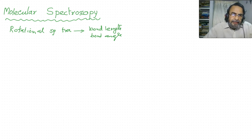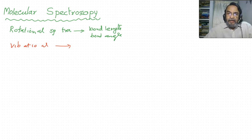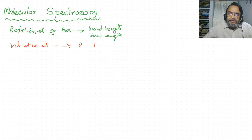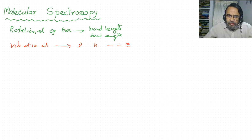The second type of spectra is called the vibrational spectra. Using vibrational spectroscopy, we can determine the fundamental vibrational frequency, force constant, and we can predict whether a molecule has a single bond — such as a carbon-hydrogen single bond — double bond or triple bond.